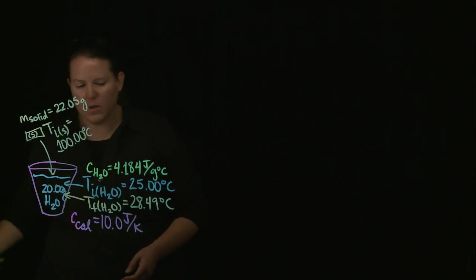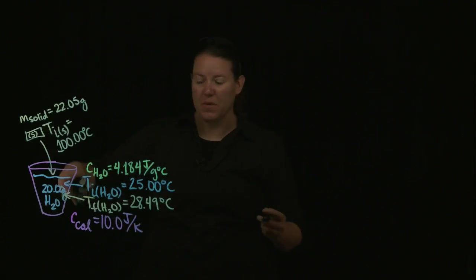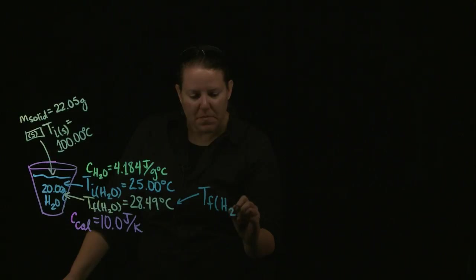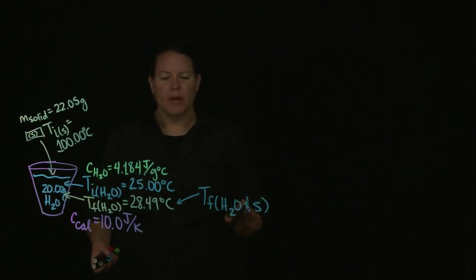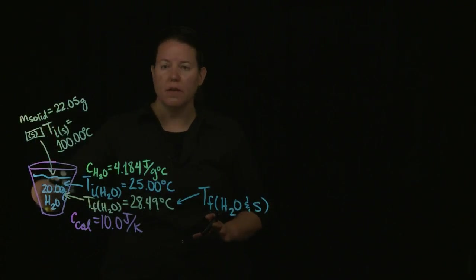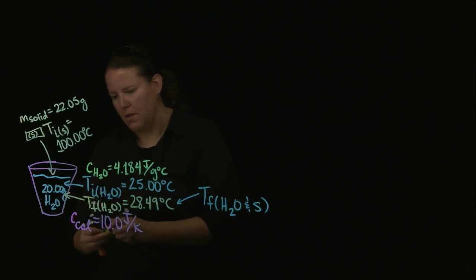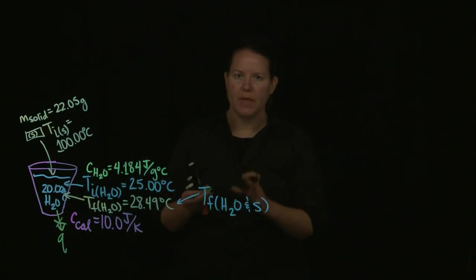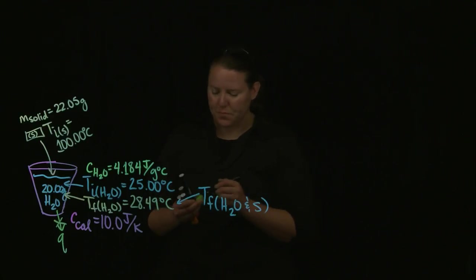The final temperature of the water is this value, but if I put the solid in there, it's actually the final temperature of the water and the solid — it's for both. The point of calorimetry is that there's no heat escaping the cup. Everything is contained within the solid, water, and the calorimeter.